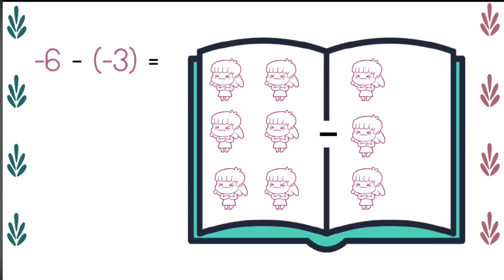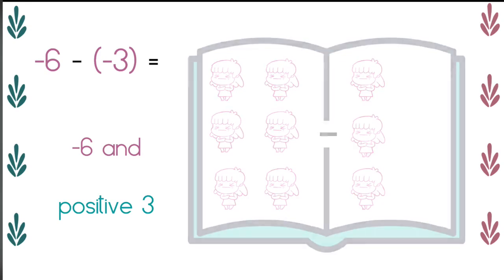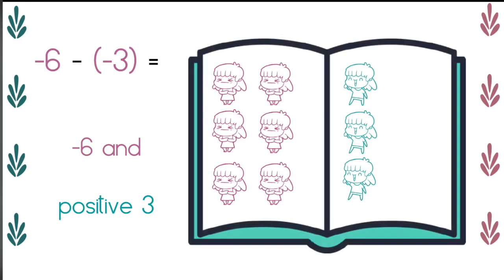How about negative six minus negative three? Again, let's replace negative six and the opposite of negative three. What's the opposite of negative three? Well, it's positive three. So my negative three people become positive three people, giving us a new problem or rewriting the problem as negative six plus positive three.